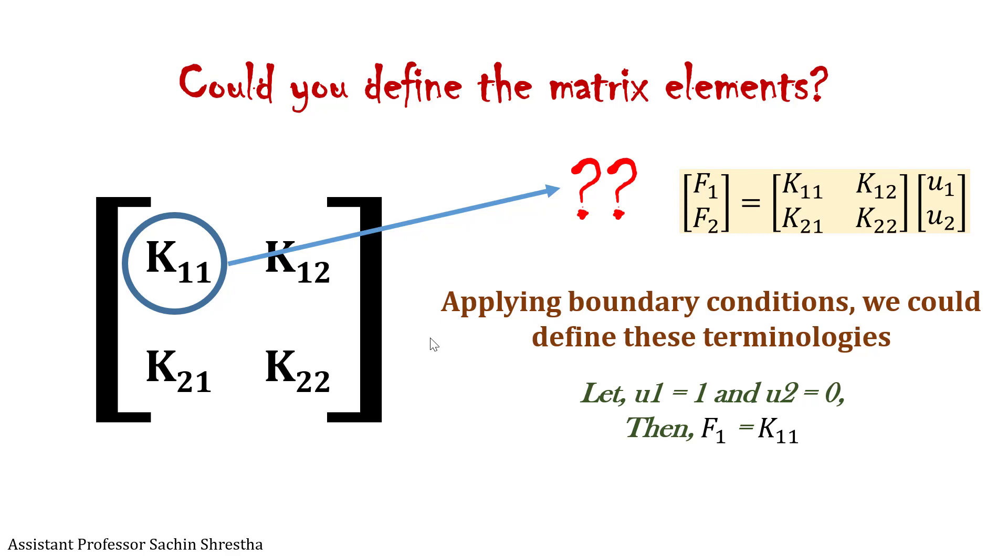Likewise, we can define K12 as the amount of force to be applied at node 1 which will lead to zero displacement at node 1 and unit displacement at node 2. Likewise, we can define K21 and K22.